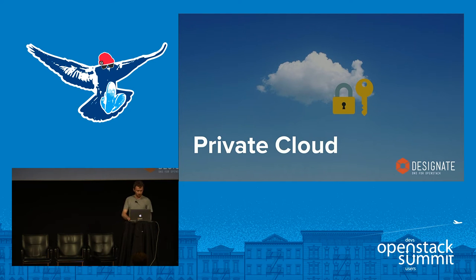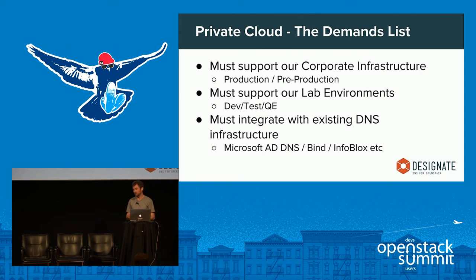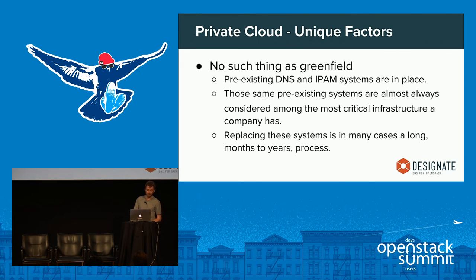For the private cloud use case: imagine a medium-to-large enterprise moving all their dev, test, QE, and even production workloads into a cloud — sick of managing servers like pets and wanting to manage them like cattle. Some demands are unique to private or enterprise cloud. You have existing corporate infrastructure that has been there a long time and is never going to change — things like Microsoft Active Directory DNS, Bind, or IPAM solutions like Infoblox.